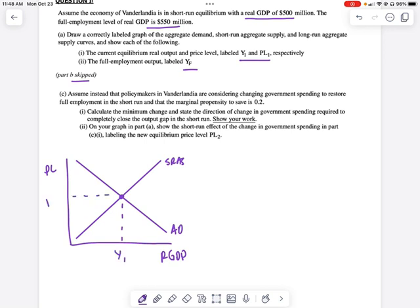And I'm gonna draw Y1 and PL1 here. Then I'm gonna draw the long run aggregate supply to the right of that short run equilibrium. And I'm gonna label it YF as they say. So again, this short run equilibrium point right here is 500, whereas the long run full employment level is right here at 550. So that's why I drew that to the right of the short run.